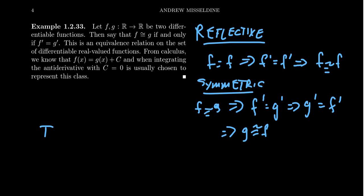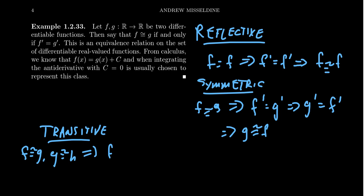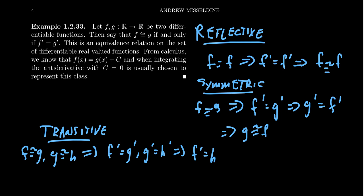And then for transitivity, equally as simple: if F is related to G and G is related to H, that implies that F prime is equal to G prime. But then the second relationship says that G prime is equal to H prime. And then by transitivity of equality, you get that F prime equals H prime, which then implies that F is related to H.